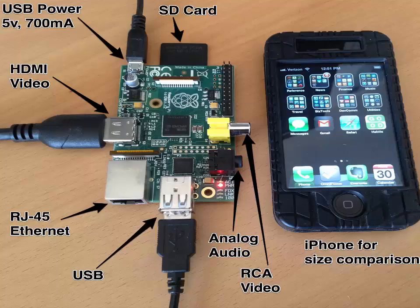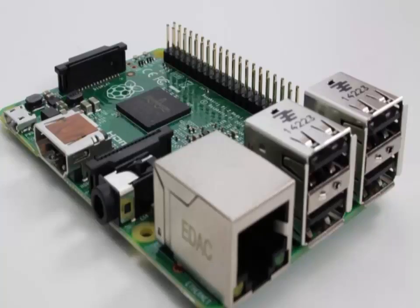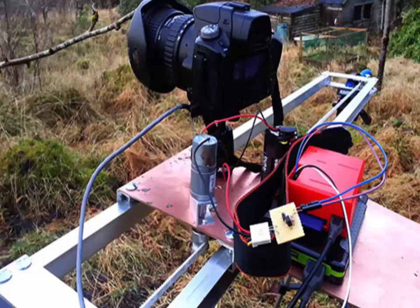The Model A comes with 256 megabytes of RAM and one USB port. It is cheaper and uses less power than the Model B. The current Model B comes with a second USB port, an Ethernet port for connection to a network, and 512 megabytes of RAM. The Raspberry Pi A and B boards have been upgraded to the A Plus and B Plus respectively.